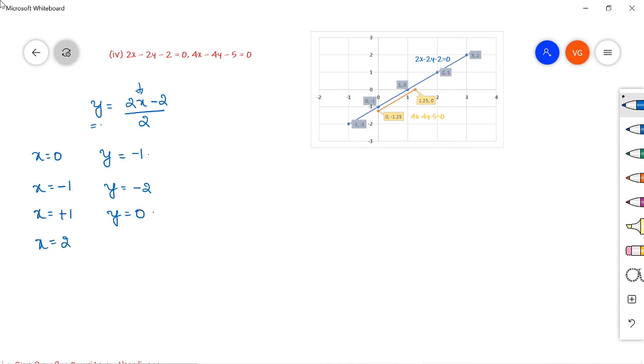Take x equals 2, then 4 minus 2 is 2, divided by 2 equals 1. Take x equals 3, then 6 minus 2 is 4, divided by 2, so you get 2.